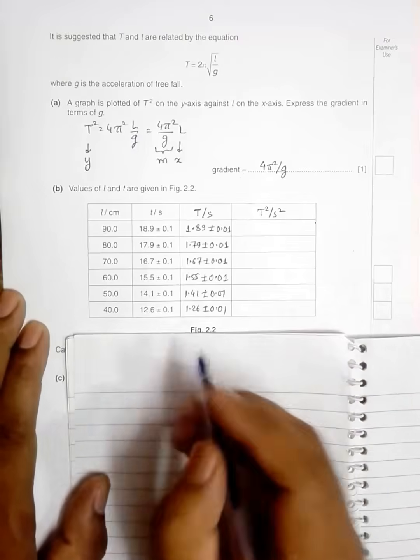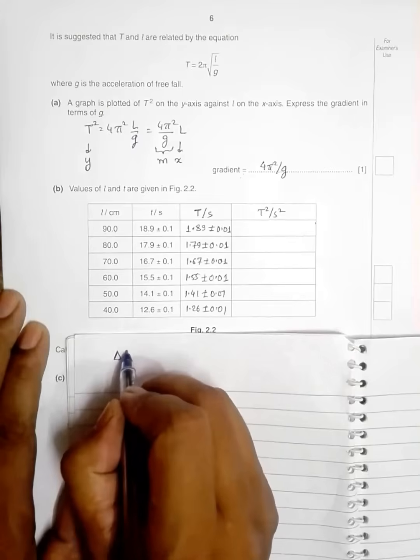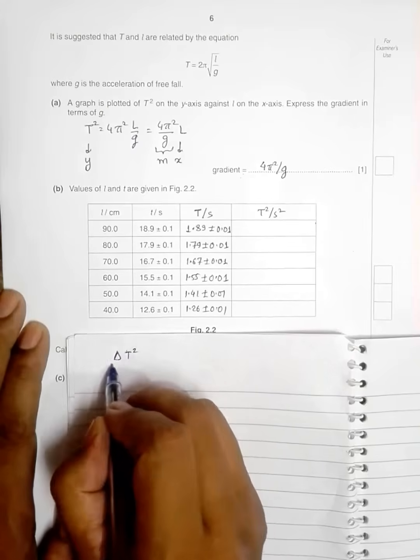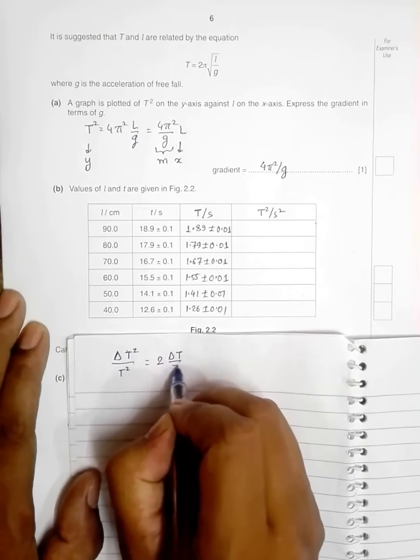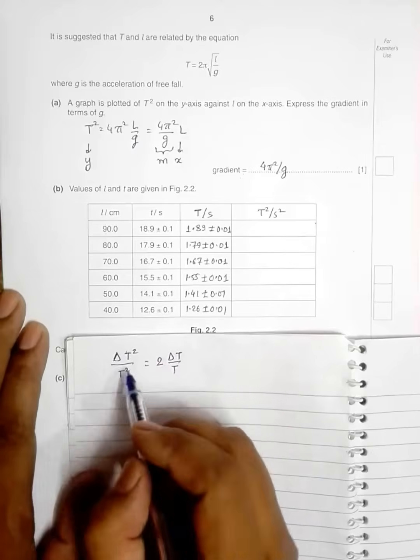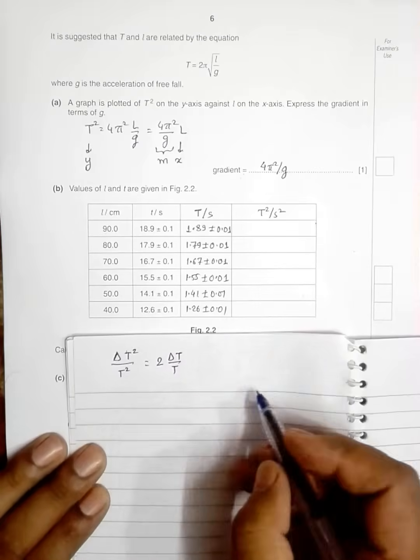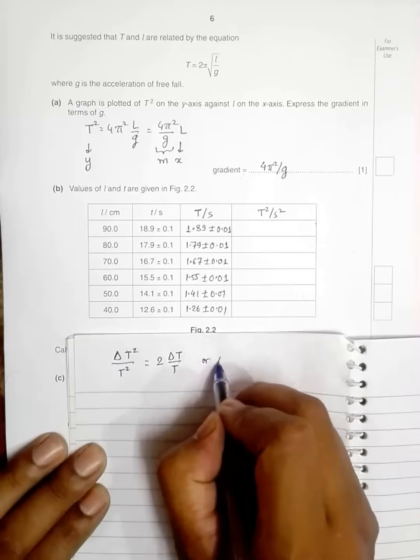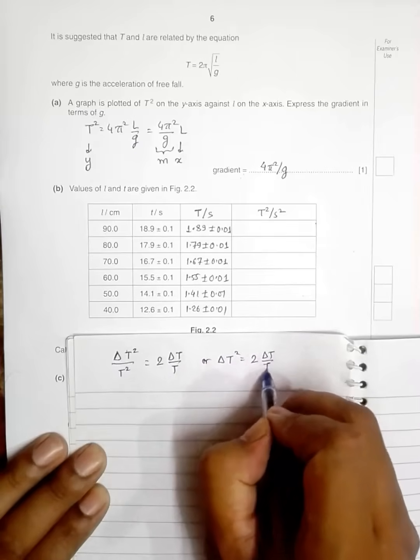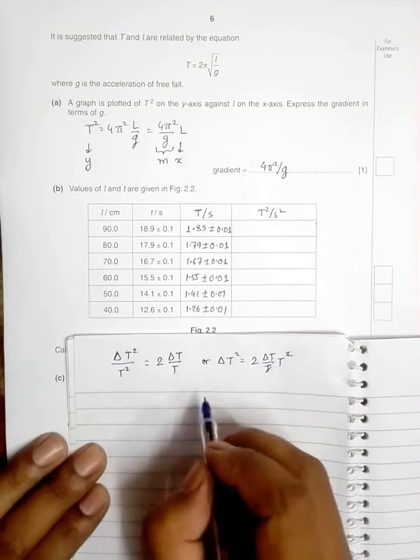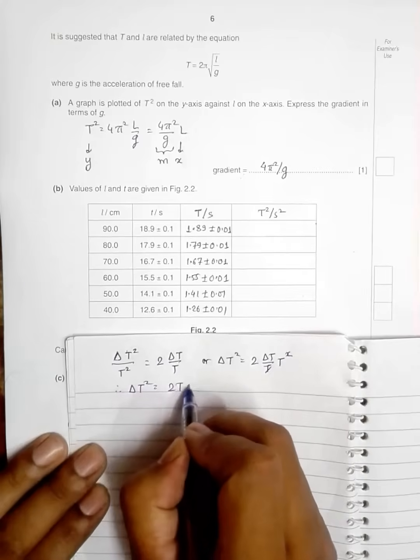The fractional uncertainty here: ΔT²/T² = 2(ΔT/T), so ΔT/T because it's the rule for the fractional uncertainty. That gives us ΔT² = 2(ΔT/T) × T². This and this cuts, so what I have is therefore ΔT² = 2T·ΔT.